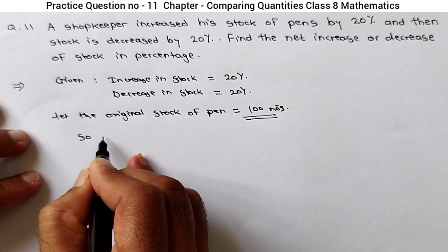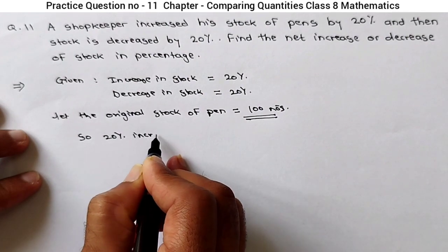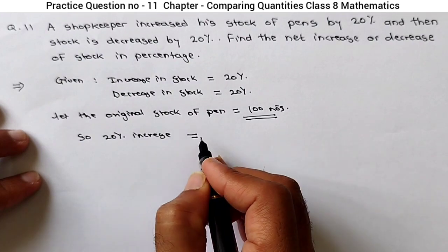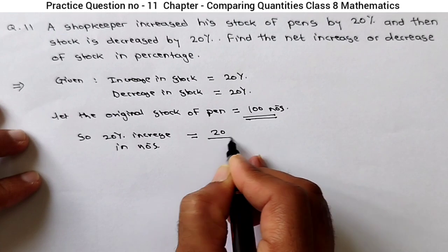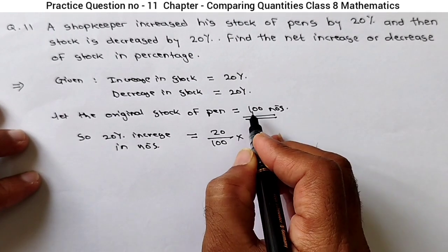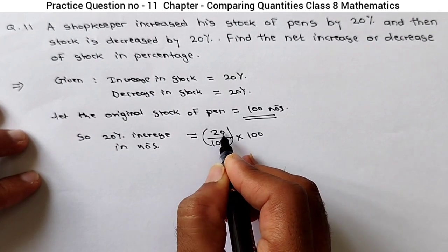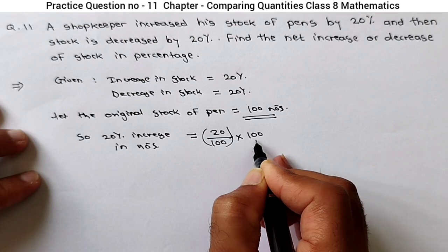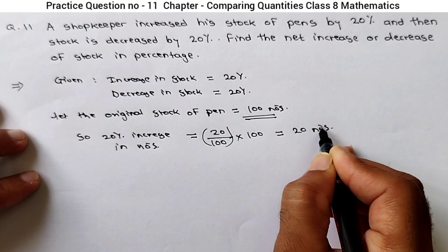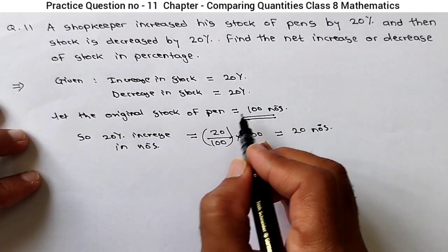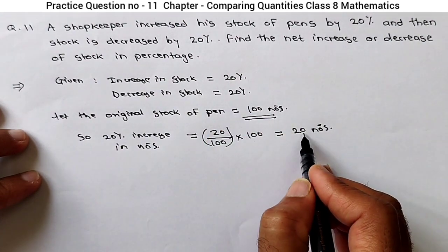So now we will calculate the increase or decrease in numbers. 20% increase in numbers will be equal to 20 upon 100 into original stock 100, which gives us 20 numbers. That is the benefit of assuming the original stock as 100 — it becomes the same in percentage and in numbers.